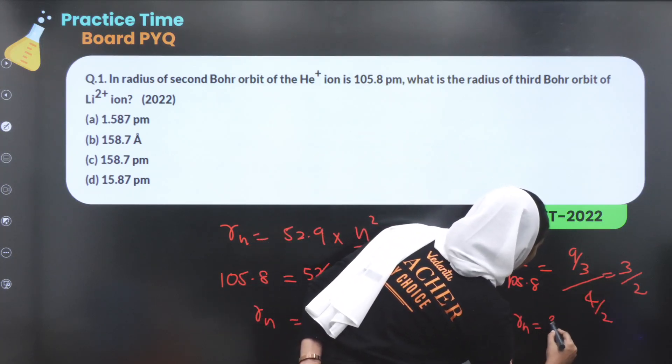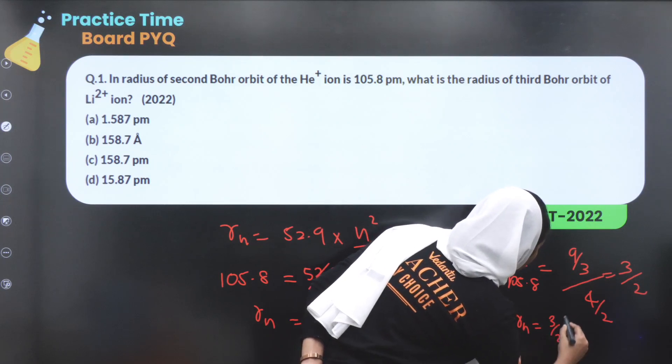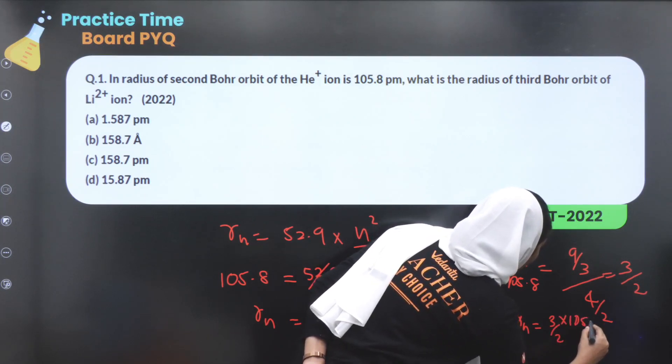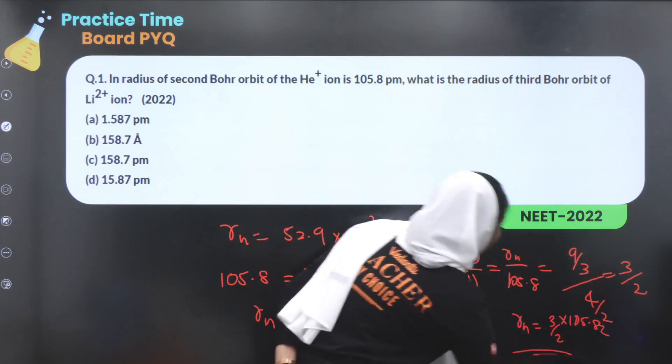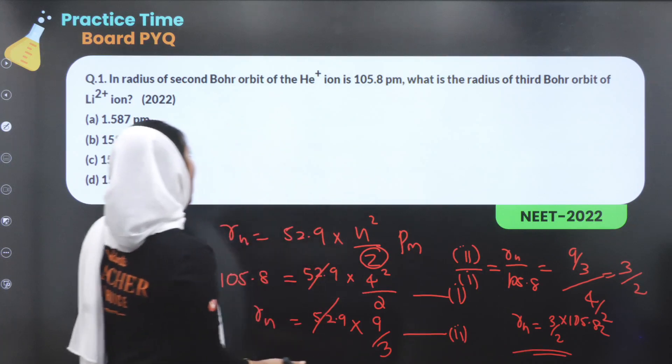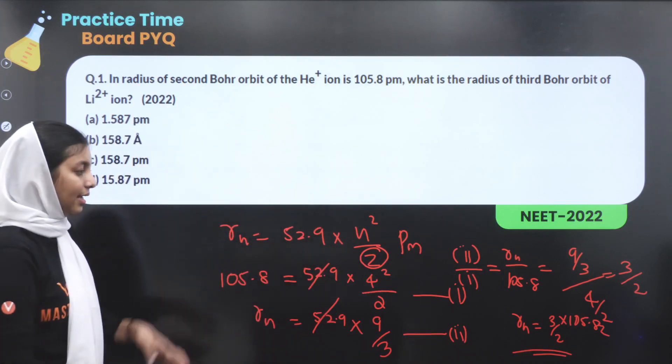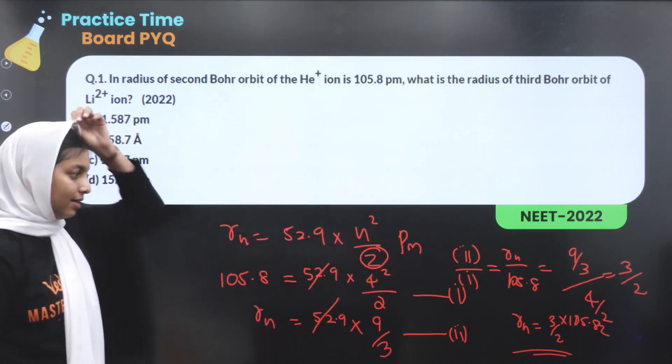Therefore R equals 3/2 times 105.8 picometers. That is the answer.